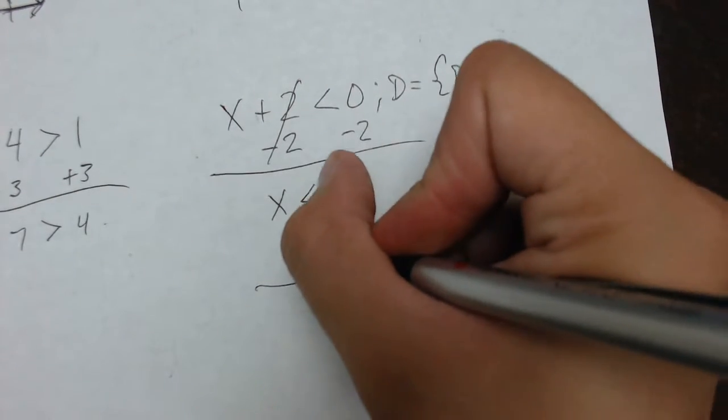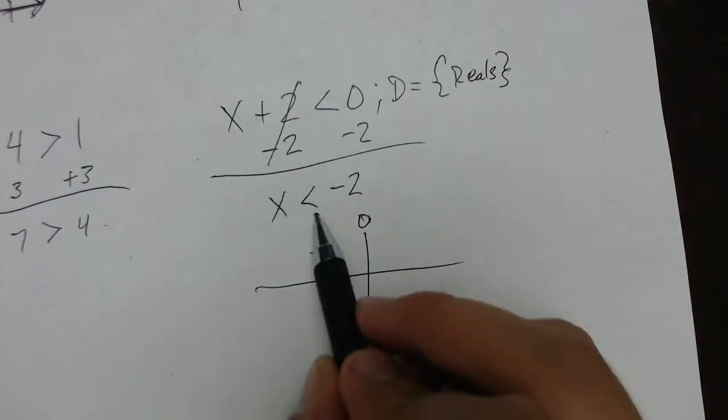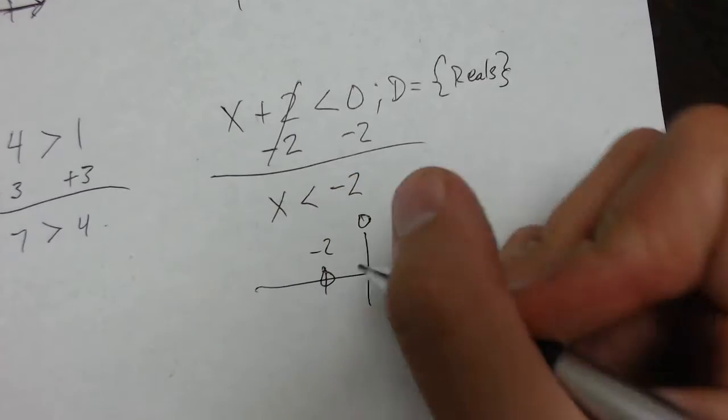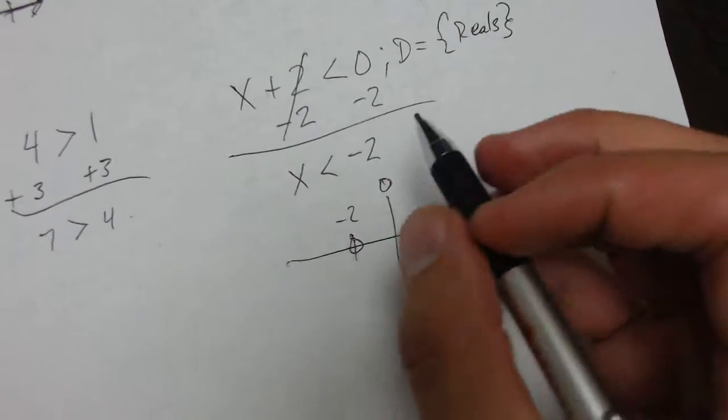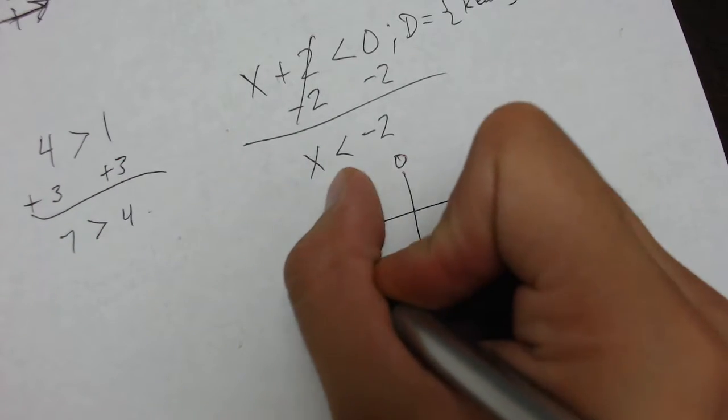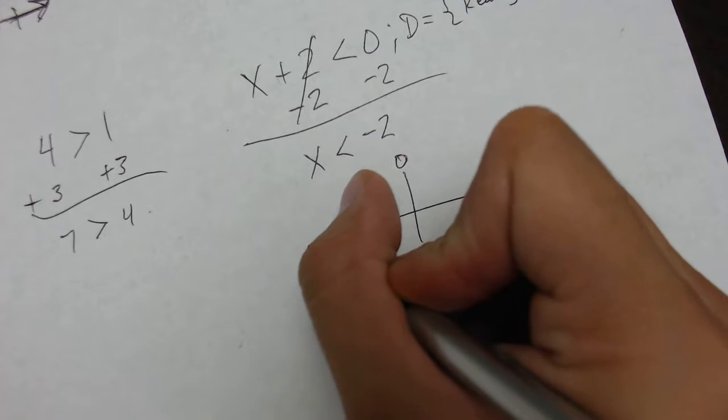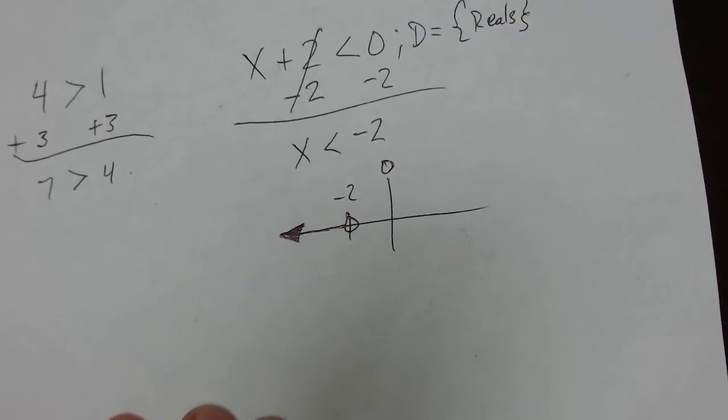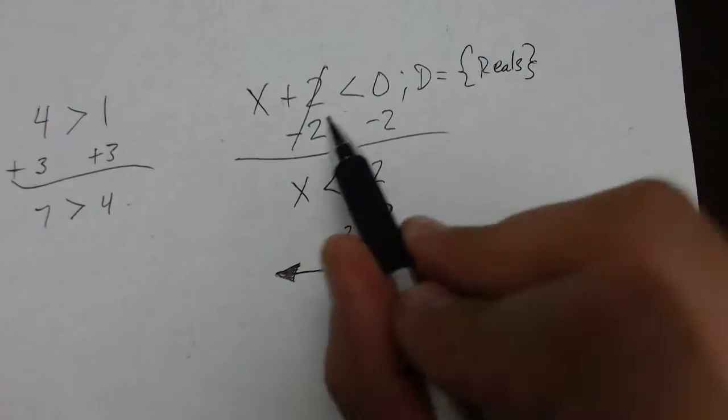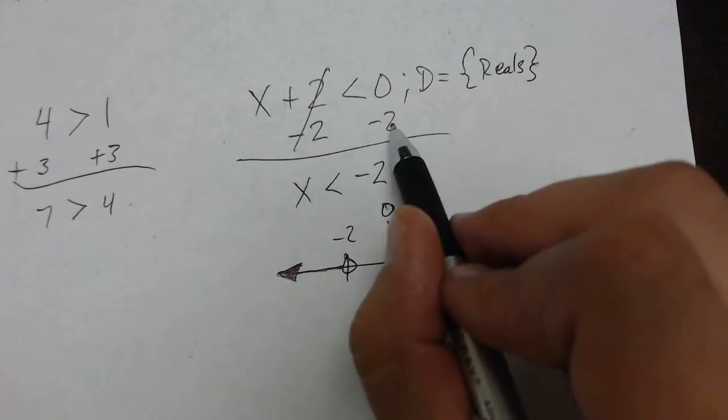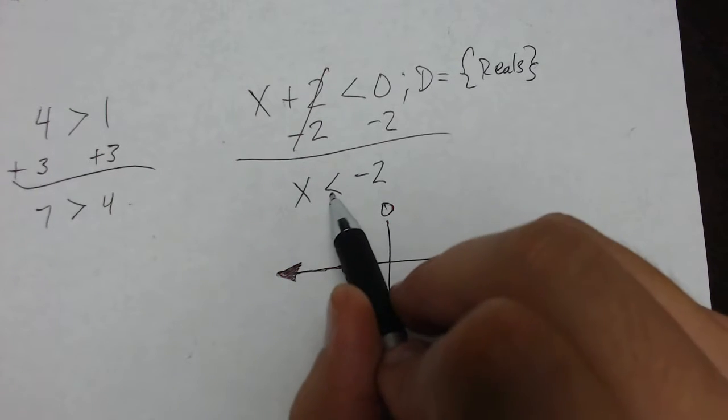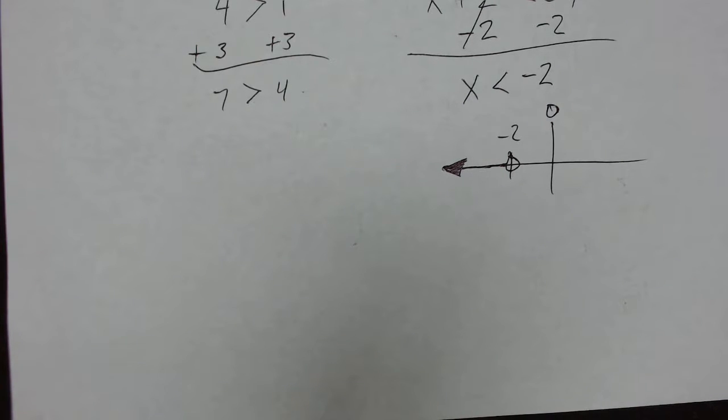So, I'll go to 0. I go to negative 2. x is not equal to negative 2, so I put an open circle, and my domain is reals, which means I can put a solid arrow going to the left. And that's how I graph that. So, using that property, you can just add or subtract the same value to each side, and the sign will not change. That's all that says.